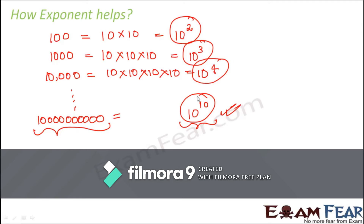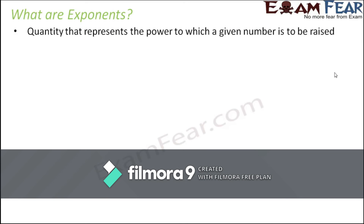This type of representation is called the exponential form. When you write any number raised to the power of some other number, that is exponential form. We read it as '10 to the power 2,' '10 to the power 3,' '10 to the power 10,' and so on. Exponents tell us how many times we use the number in multiplication. For example, in 2 to the power 4, the exponent 4 tells us to use 2 four times in multiplication.